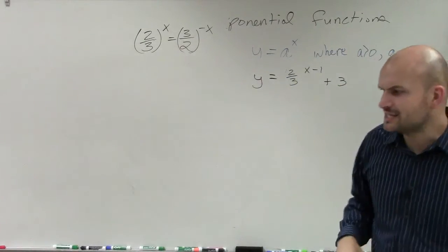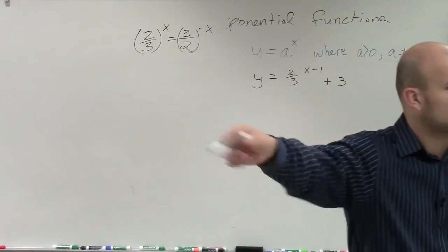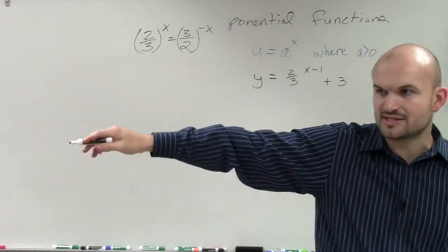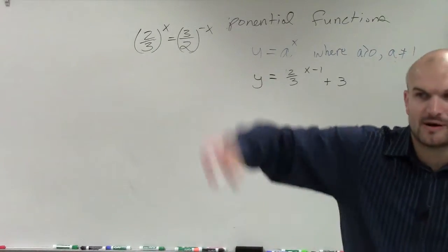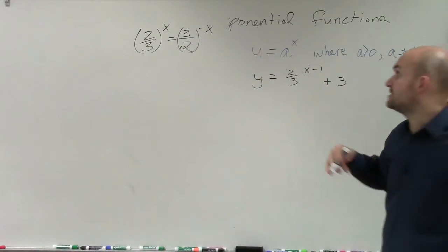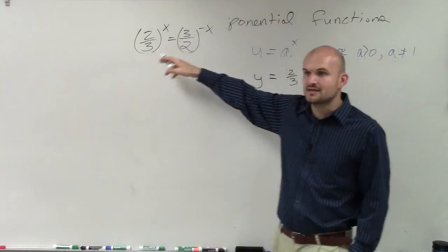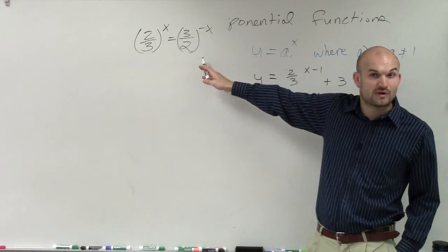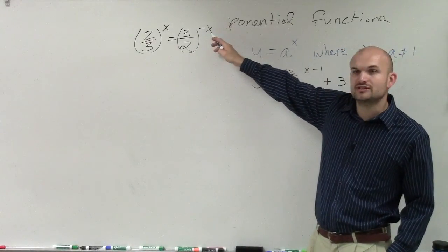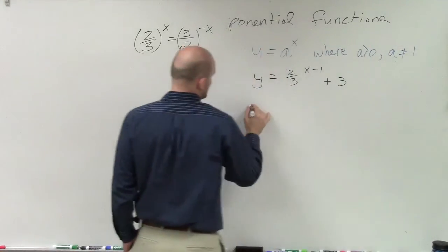Because if you just plug that into your calculator, you say why is the graph going in the other direction, right? Why does the graph look like it's going down? All of the graphs we talked about were going up. The reason why it's going down is because if I rewrite it as a value a greater than 1, and you can see it's written as a negative x, all right? So I'll show you how it's going to look.